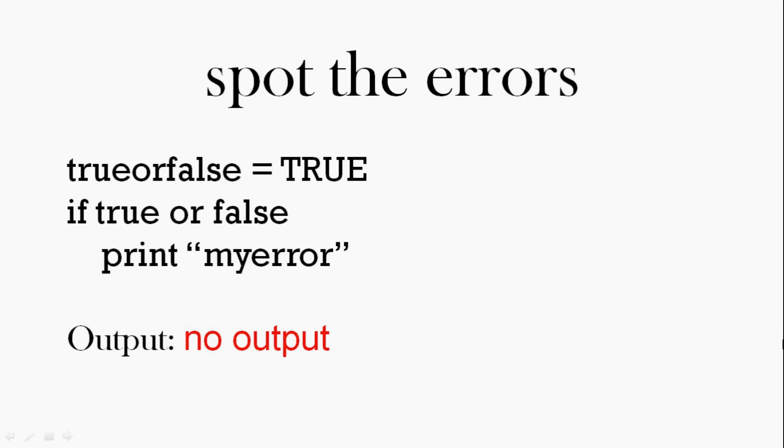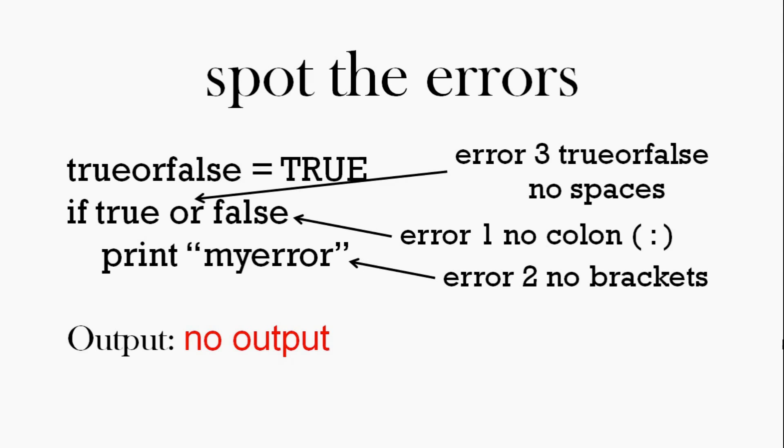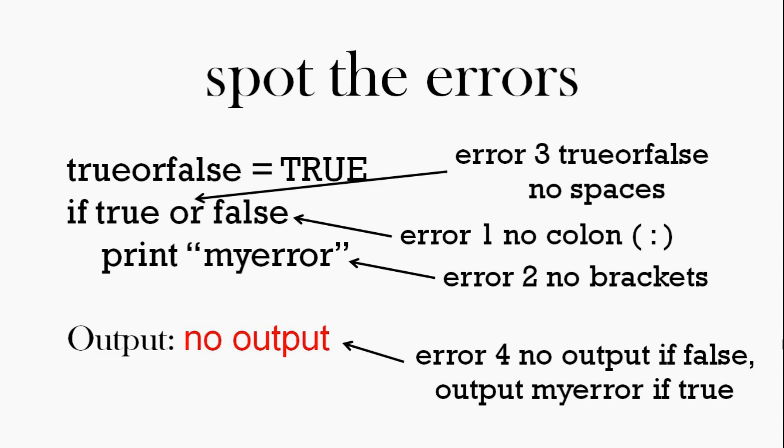Spot the errors. Here we have some code. How many errors did you find? There's four. Error one: there's no colon after the true or false part. Error two: there's no brackets in the print statement. Error three: the true or false should be all one word. There's no spaces. And the final error. Can you see it?